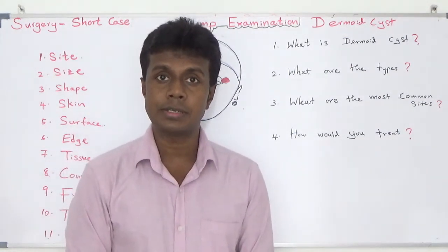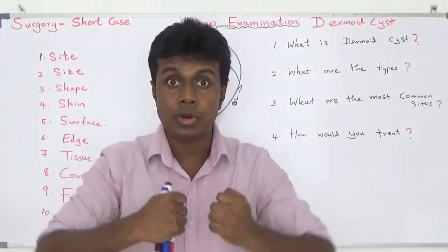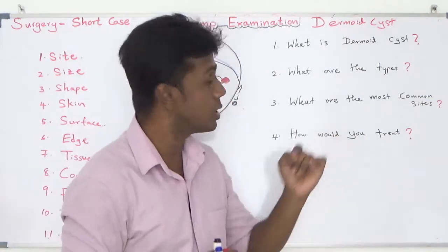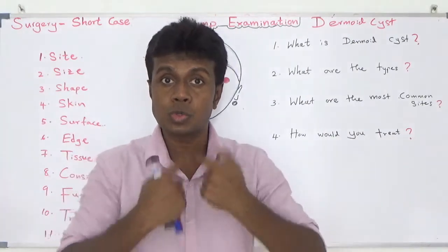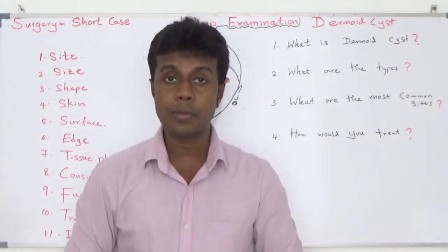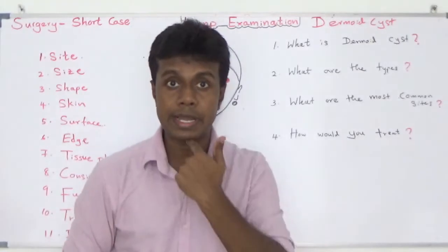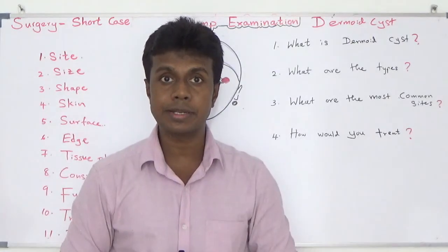Why is the midline the most common site? Failure of fusion of the dermotome gives rise to dermoid cysts. Dermotome fusion usually happens in the midline. Therefore, dermoid cysts can occur in the forehead, neck, chest, and midline.